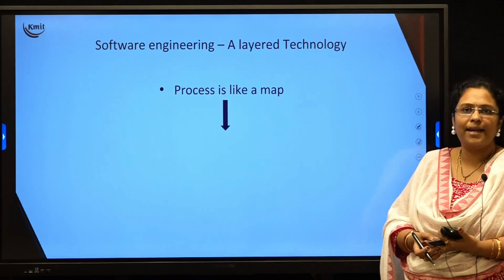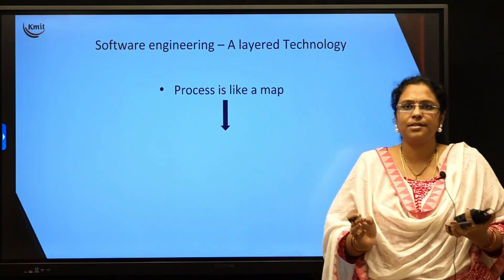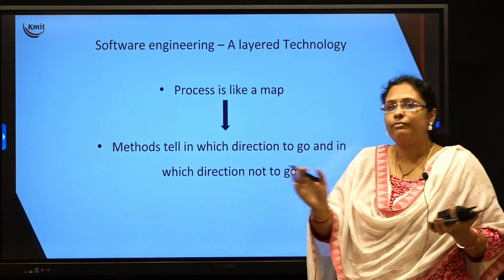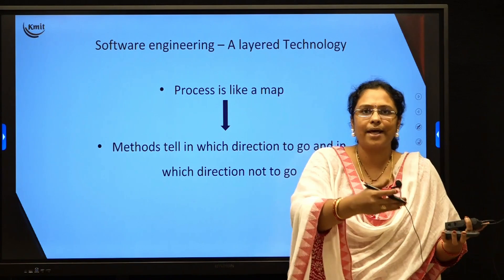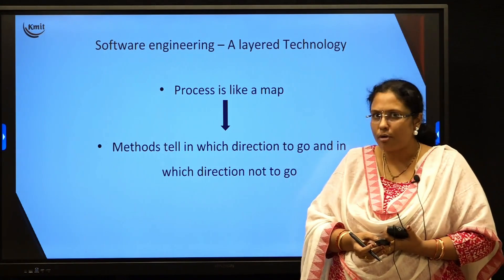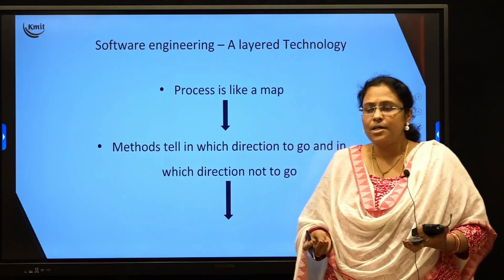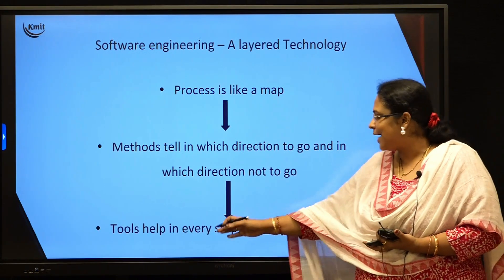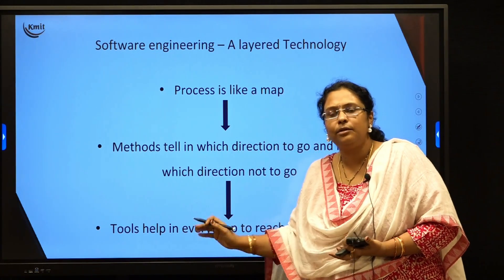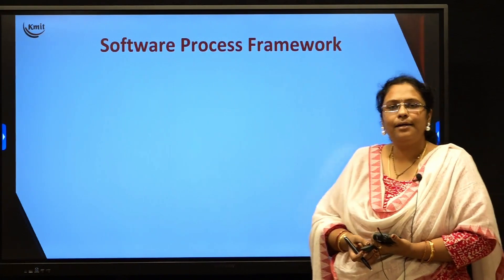To simplify further, take an example: process is just like a Google Map when you are going from one location to another. The Google Map tells you which directions to take to reach your destination quicker and which directions have a lot of traffic — that is your methods. To reach that destination you will take either a car, a bike, or an auto — those are your tools. Finally, by following process, methods, and tools you will be able to deliver a quality product to your end user.